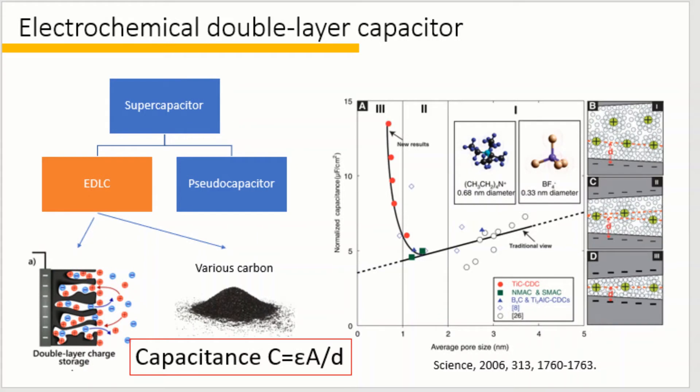The capacitance of capacitor equals epsilon A over d. It means the permittivity multiplied by the surface area divided by the thickness of the double layer. So a higher surface area means higher capacitance.